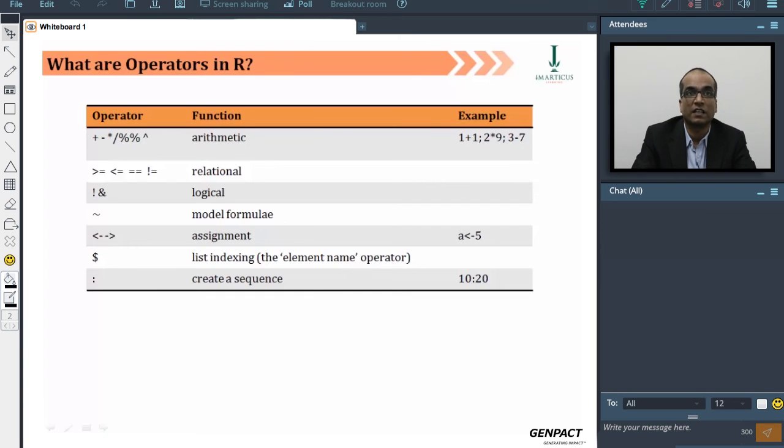The assignment operator, the less than dash, can also be written as dash greater than, which means you are assigning something on the left to the right. But preferably you should be doing the previous notation. The dollar is indicative of using a list separator. If you are trying to access something like a data frame—say there is a data frame with the name customer—how do you access the individual columns? That is with the dollar operator. And to create a sequence, you will be using the colon operator.